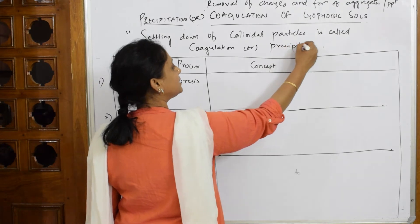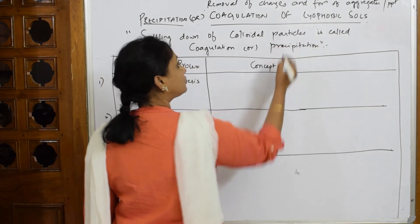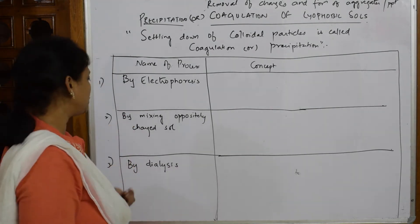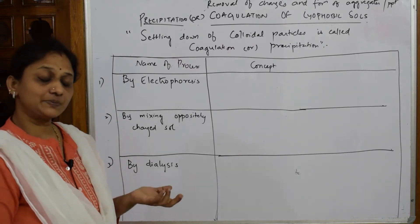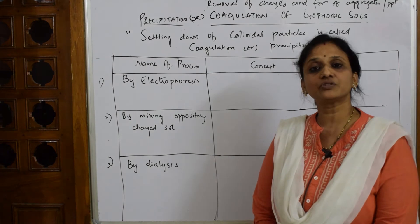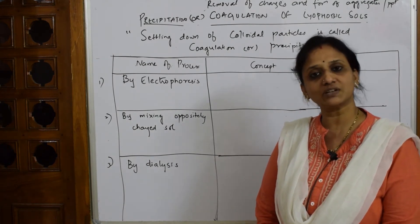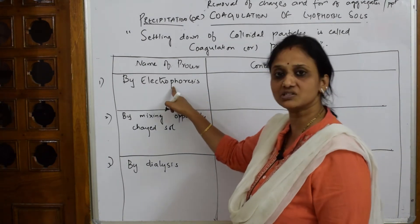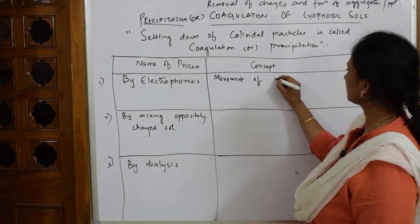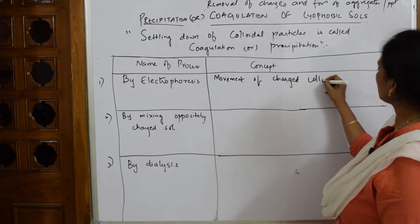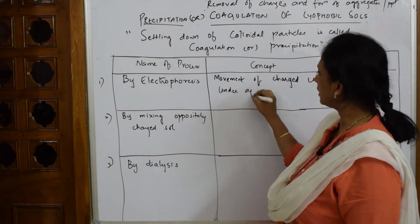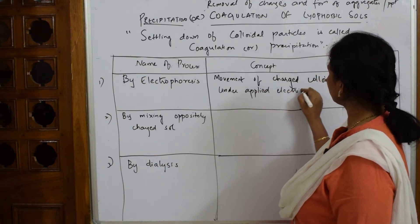Now if I have to coagulate or precipitate, I have to find the different procedures. The different methods for coagulating or removing the charge - in the exam they may ask you to explain the different methods for coagulating colloidal sol. The first important method is electrophoresis, which we have already studied. The concept is the movement of charged colloidal particles under an applied electric field.